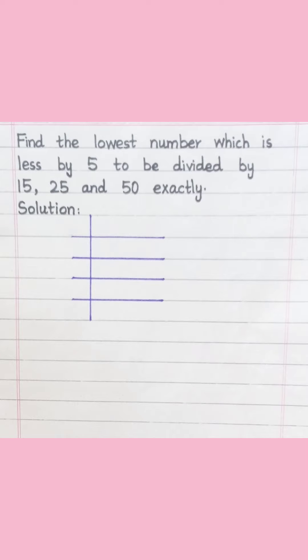Find the lowest number which is less by 5 to be divided by 15, 25, and 50 exactly.